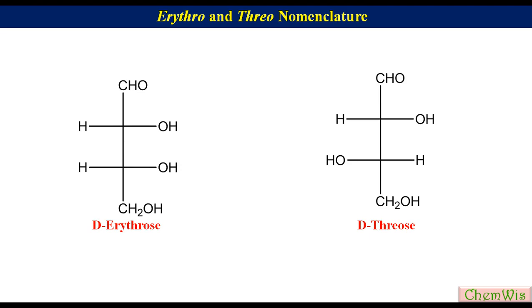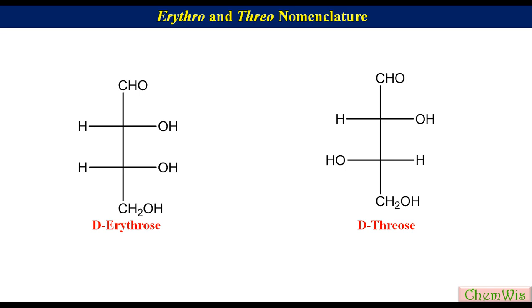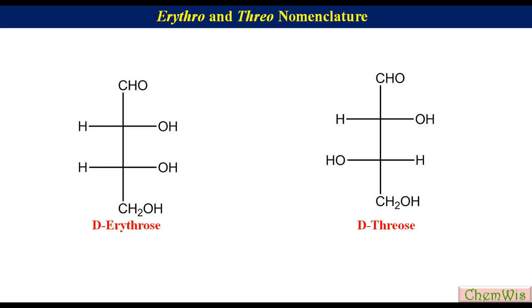In D-erythrose and D-threose, the two different substituents — CHO and CH₂OH — are on the vertical lines. In erythrose, the two hydroxyl groups are on the same side, and the two hydrogen atoms are on the same side too. In threose, the two hydroxyl groups are on opposite sides, as are the H atoms.